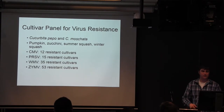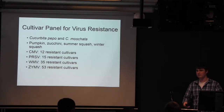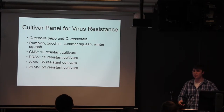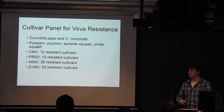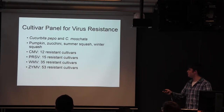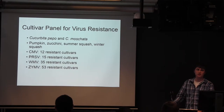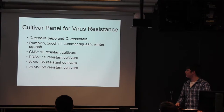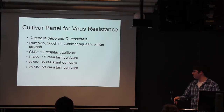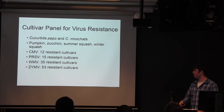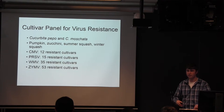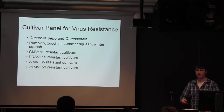To get started, I was looking for any variety listed as having some resistance to any of these viruses. I got a pretty good collection of mostly cucurbita pepo, some moschata, and a bunch of different market classes. Unfortunately, for our two most important viruses, CMV and PRSV, there just aren't that many resistant cultivars available. Moving forward, I'm evaluating these and picking the best ones to develop segregating populations. For WMV and ZYMV, we have a few more varieties, so we can start doing more mapping with those.